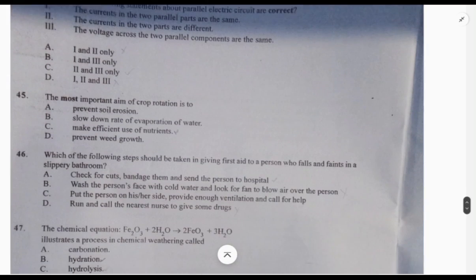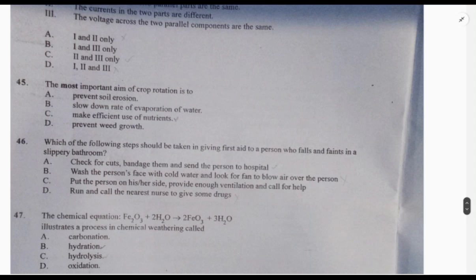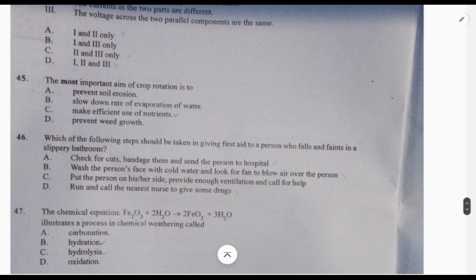Question 45: the most important aim of crop rotation is to prevent soil erosion, slow down rates of evaporation. The first two are not it. C, make efficient use of nutrients - that's true. 46: which steps should be taken in giving first aid to a person who falls and faints in a slippery bathroom? When a person falls, there will be a cut or some form of bruises. So 46 is A: check for cuts, bandage them, and send them to the hospital.